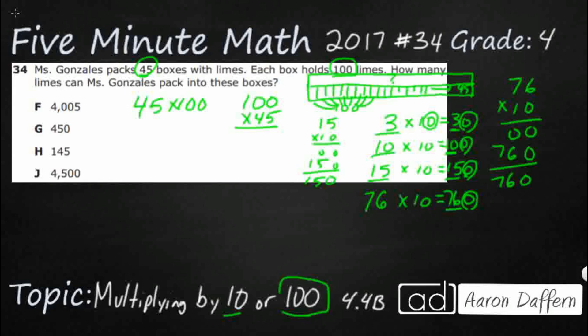Now how does this help us with our problem? Well, when we multiply by 10, a similar pattern comes up when we multiply by 100. That's going to help us with our 45 times 100.